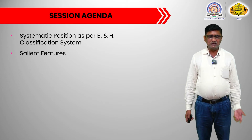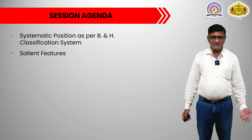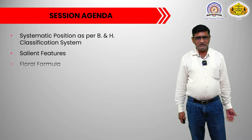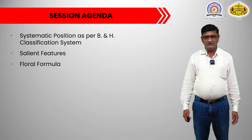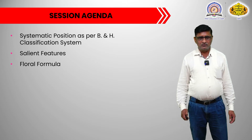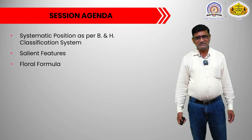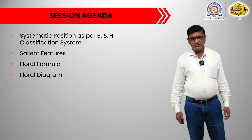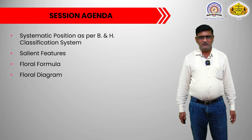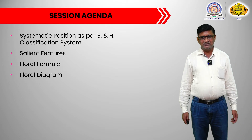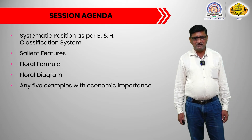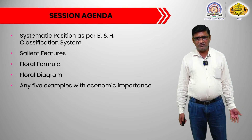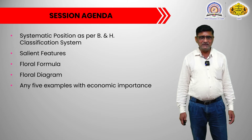We also want to learn the salient features of this particular family — what the salient features are, and from those salient features we will be able to recognize the particular family. We also want to form the floral formula after studying the salient features, and after the floral formula, we have to draw the floral diagram by observing the features present in the flower. And lastly, we have to study what different common plants belong to this family and their economic importance.